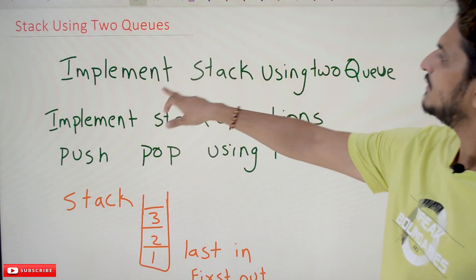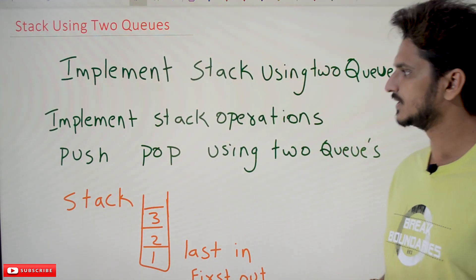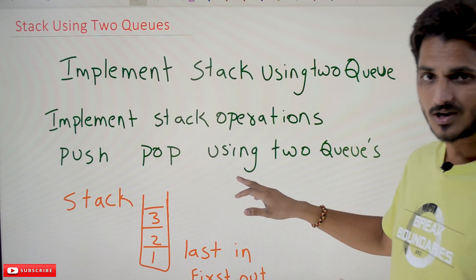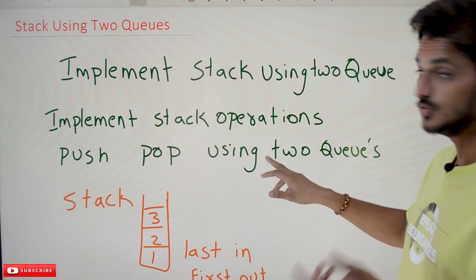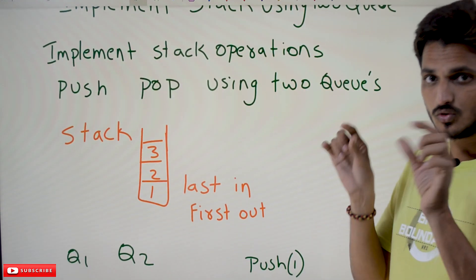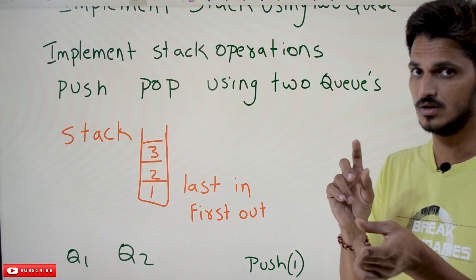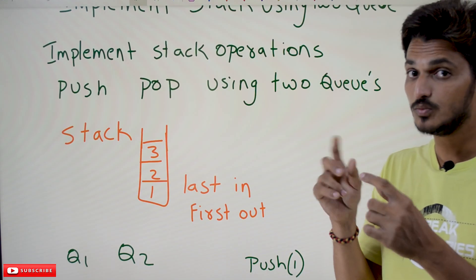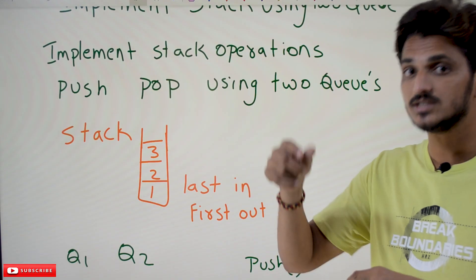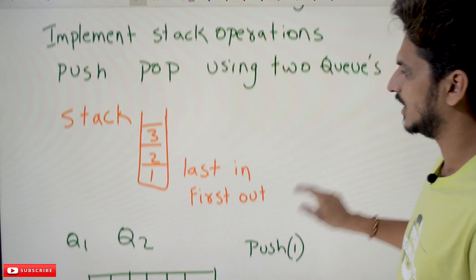Coming to today's class, we need to implement a stack using two queues — implement stack operations: push and pop operation using two queues. You have to take two queues. Queue means first in first out, but it should work as last in first out. Stack is last in first out.